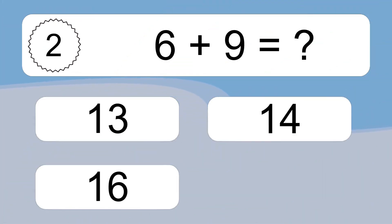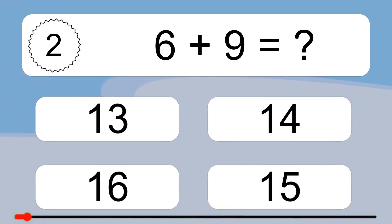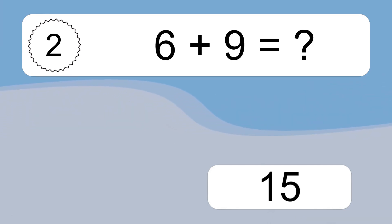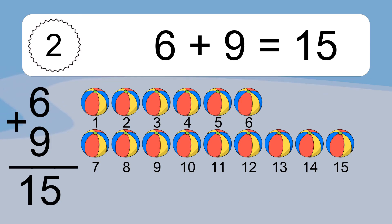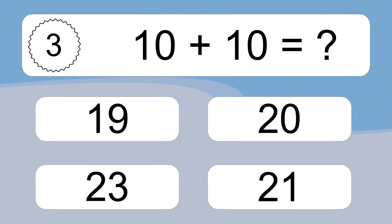6 plus 9 equals what? 6 plus 9 equals 15. Let's count it. 1, 2, 3, 4, 5, 6, 7, 8, 9, 10, 11, 12, 13, 14, 15.